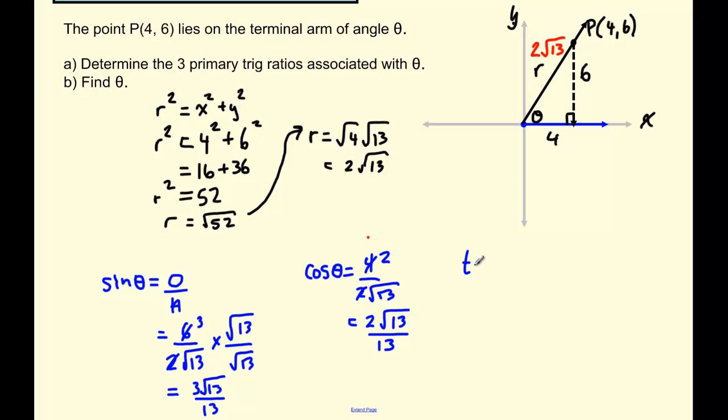Tan theta, remember tan is equal to opposite over adjacent. So the opposite side is 6. The adjacent side is 4. This is much easier to simplify. 6 over 4. Well, we know that that is equal to 3 over 2, or 1 and 1 half, 1.5. And there you have it.